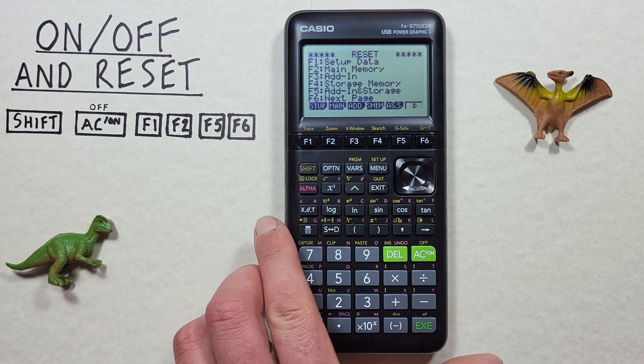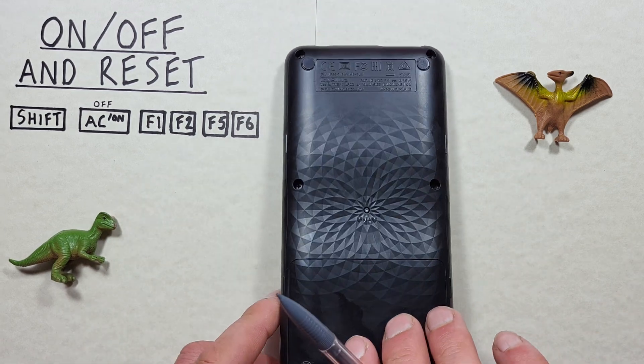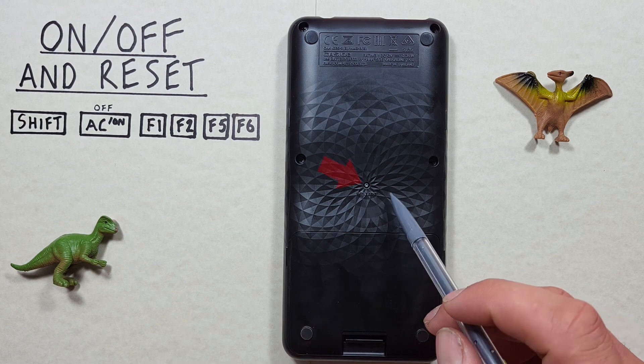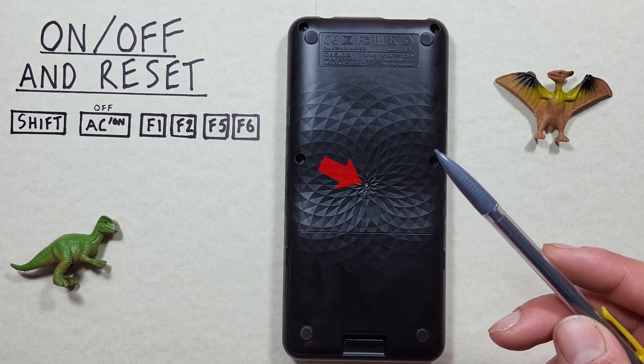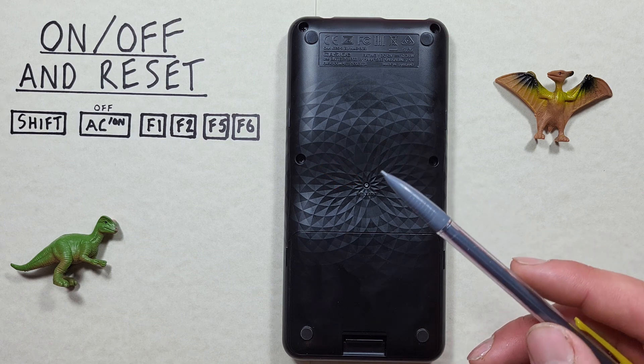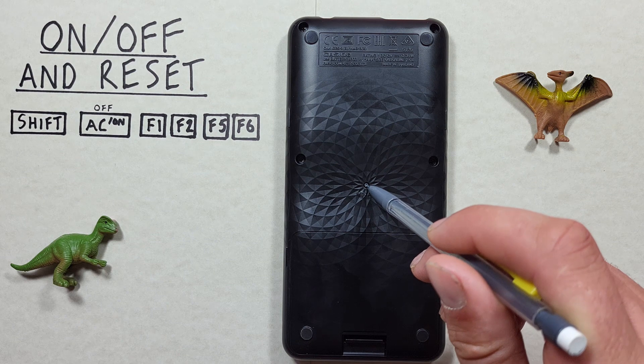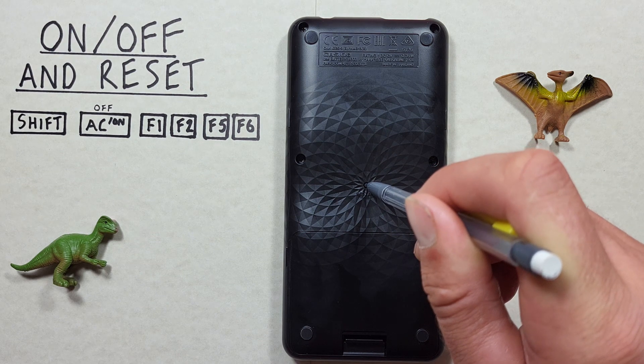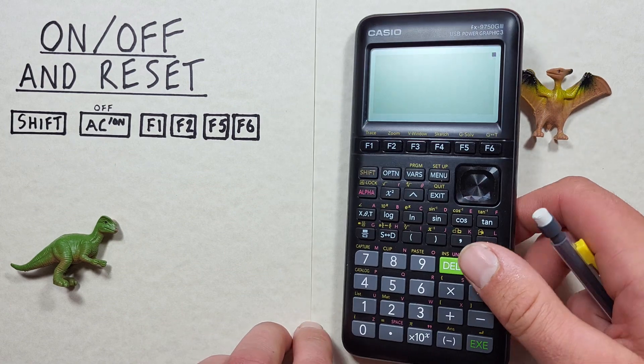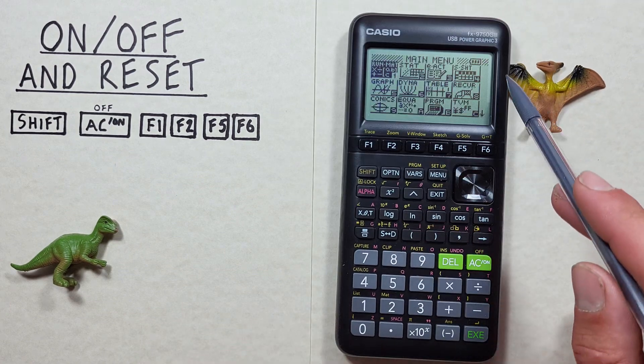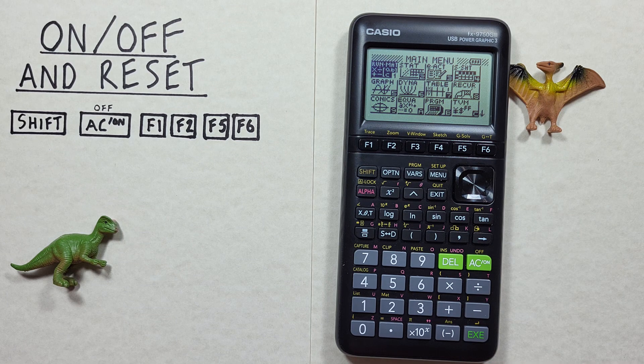To do this, turn your calculator over and you'll see a button on the back that says restart. Find a small pointed object like a pencil or a pin, and then press that button in the back in so you feel it go in and then release. Your screen will go blank and then it'll come back to the main menu and your calculator will have been reset.